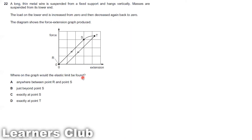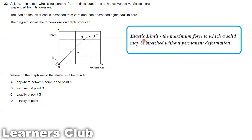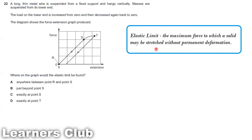They are keeping a load on a thin metal wire, and the extension keeps increasing from zero. When the load is removed, it gets back to its original length. That means it's an elastic change — it's not getting permanently deformed. The elastic limit is the maximum force to which a solid may be stretched without permanent deformation.